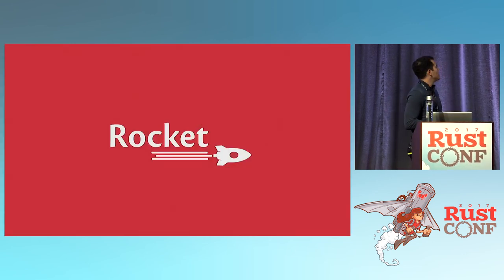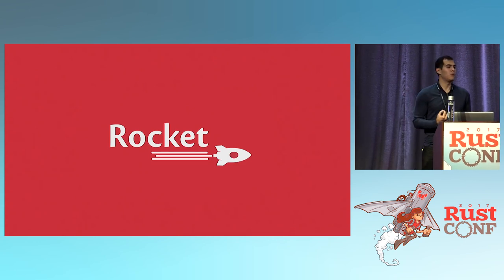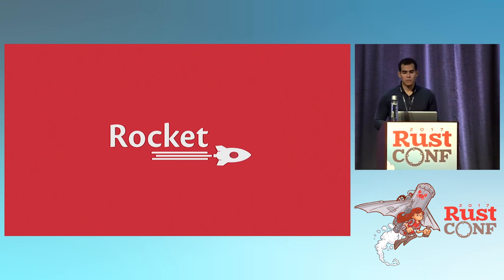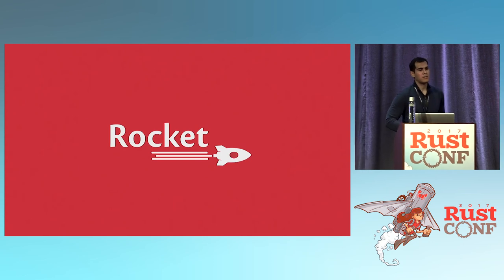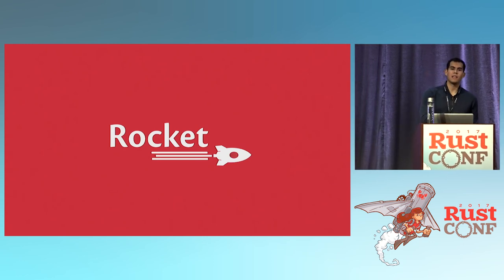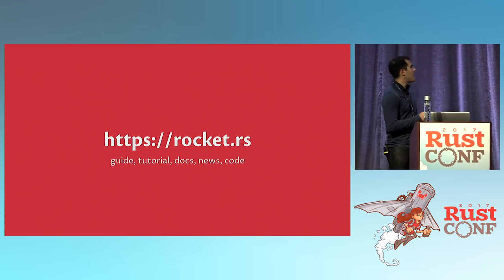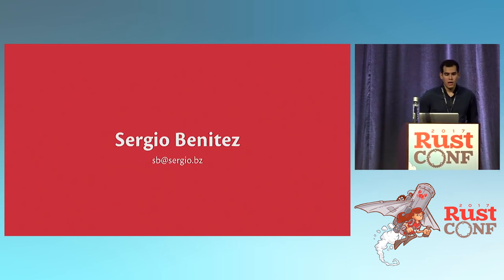That's all I have to say about Rocket and code generation. If you're trying to do something the computer can do for you in a really nice way, take a look at code generation — the APIs will get much better, and code generation can really improve the simplicity of APIs and the robustness of applications. Here's the website — there's a guide, tutorials, Rust docs, news, and a link to the GitHub repository. I'm Sergio, here's my email, and thank you for your time.